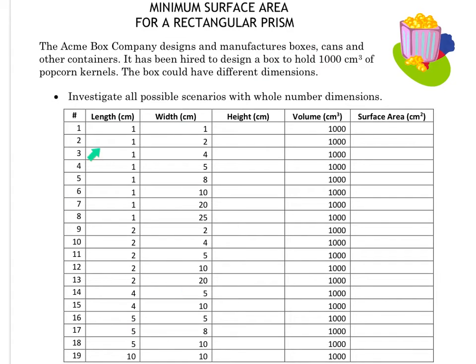So here we have all kinds of different scenarios. I've given you the length and the width, and you need to calculate the height. They all have a given volume of 1000 centimeters cubed. We're going to take the volume and divide it by the length and divide it by the width, because length times width times height equals the volume.